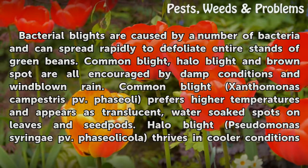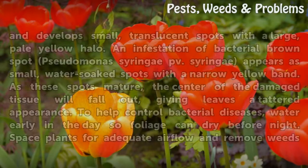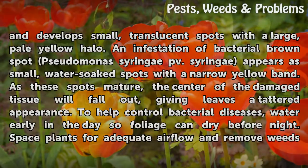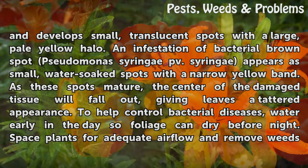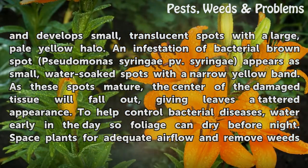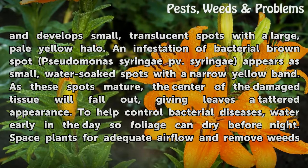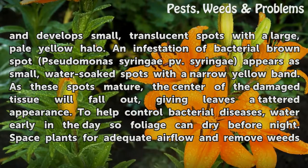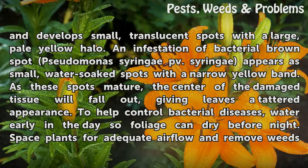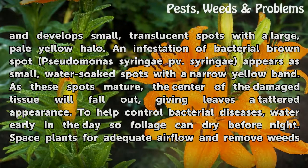Halo blight, Pseudomonas syringae pv. phaseolicola, thrives in cooler conditions and develops small, translucent spots with a large, pale yellow halo. An infestation of bacterial brown spot, Pseudomonas syringae pv. syringae, appears as small, water-soaked spots with a narrow yellow band. As these spots mature, the center of the damaged tissue will fall out, giving leaves a tattered appearance.